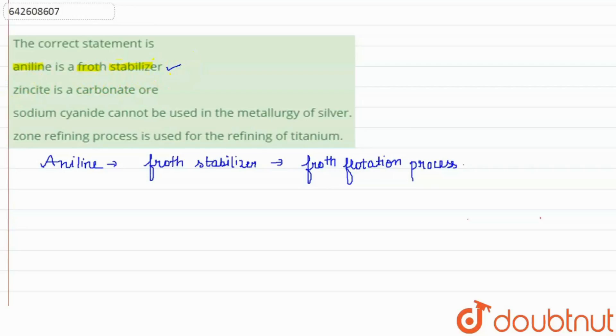Moving towards the second statement, it says that zincite is a carbonate ore. So let us write down the molecular formula of zincite. So zincite is ZnO. Now you can see that zincite contains the ore of zinc and not of carbonate. So therefore, our option number two is incorrect. This statement is incorrect.